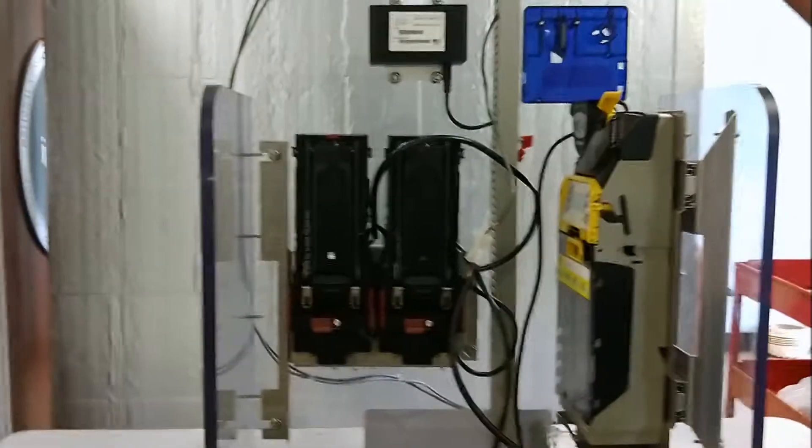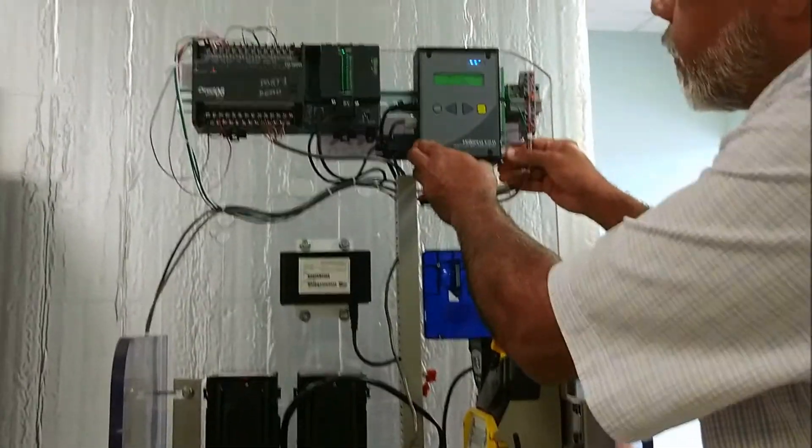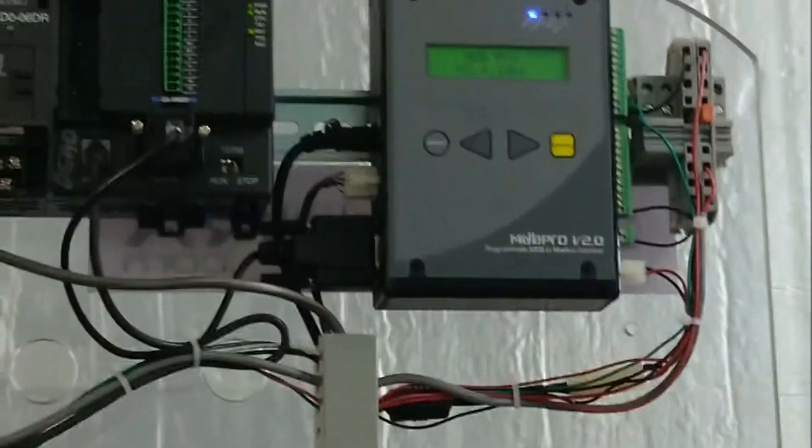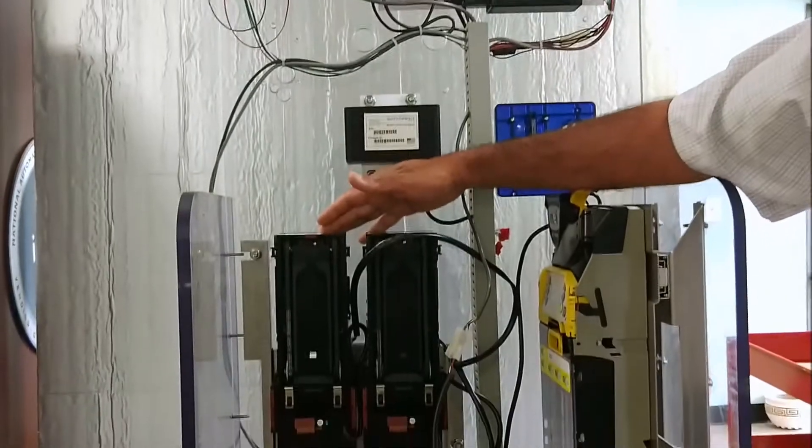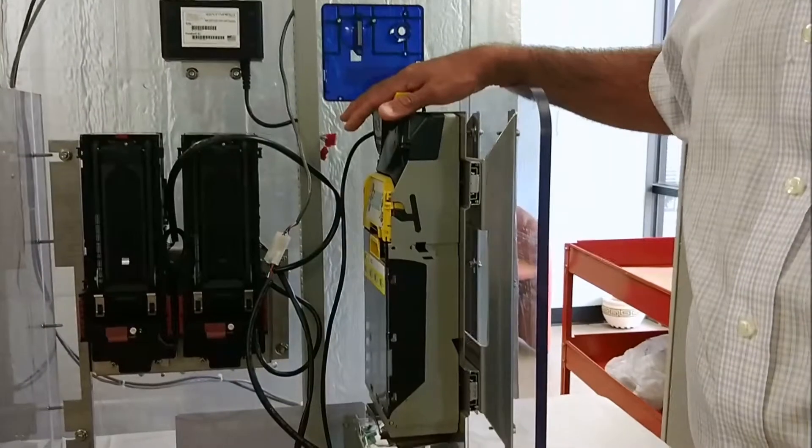Now, when I power up the MDB Pro again, I'm plugging it in. Only one bill acceptor comes on. The other bill acceptor has no power. The coin changer has no power.